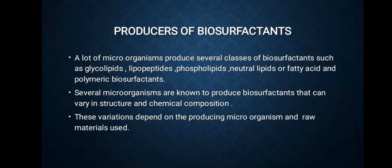Then comes the producers of biosurfactants. A lot of microorganisms produce several classes of biosurfactants such as glycolipids, lipoproteins, phospholipids, neutral lipids or fatty acids, and polymeric biosurfactants. Several microorganisms are known to produce biosurfactants that can vary in structure and chemical composition. These variations depend on the producing microorganisms and the raw material used.